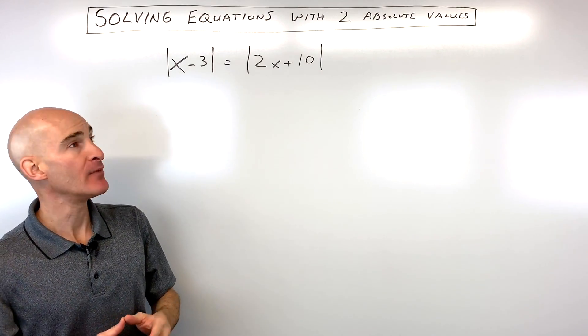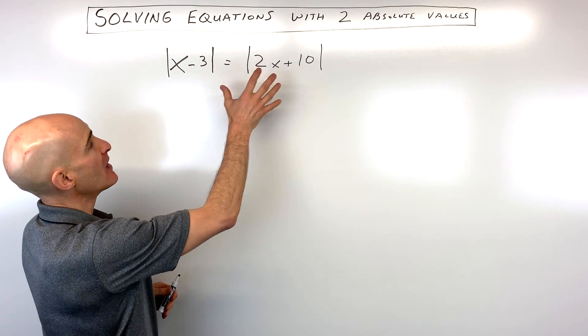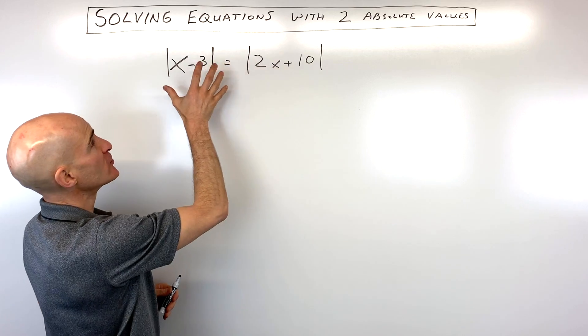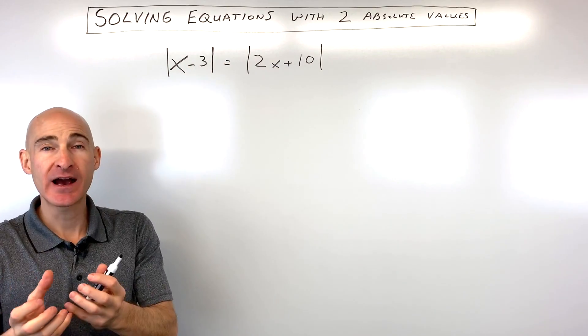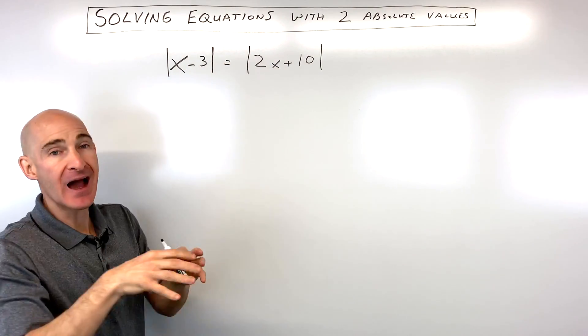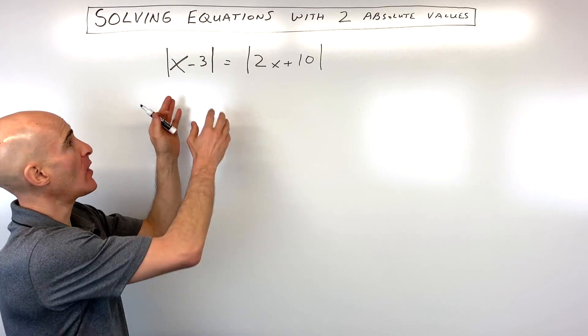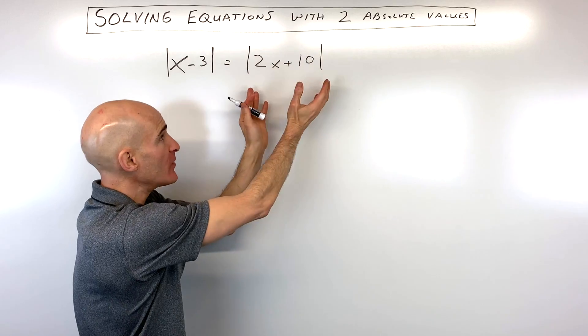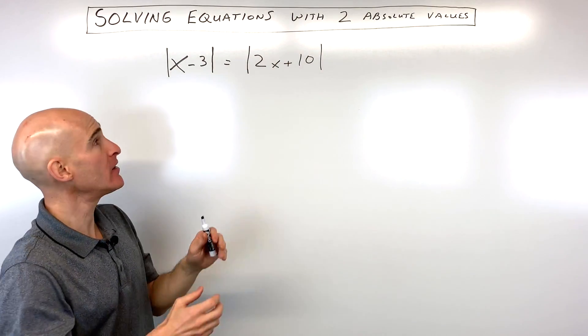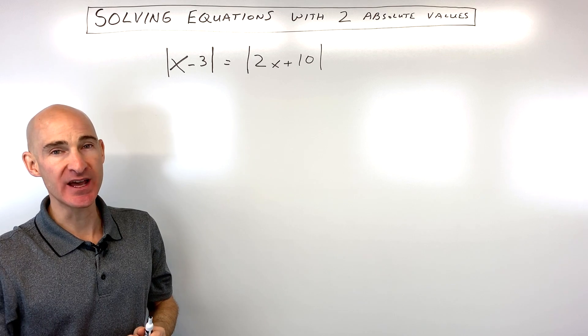There are two different ways that you can do this problem. One is you can say that 2x plus 10 is equal to the positive x minus 3 or the opposite of the quantity x minus 3, or you can do x minus 3 equals the positive quantity 2x plus 10 or the opposite of the quantity 2x plus 10.